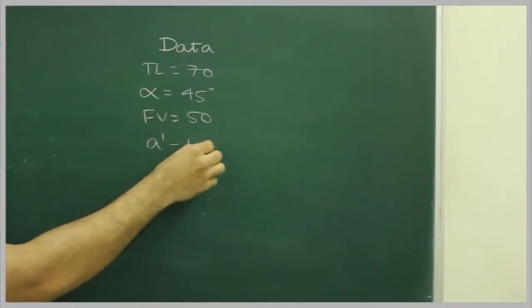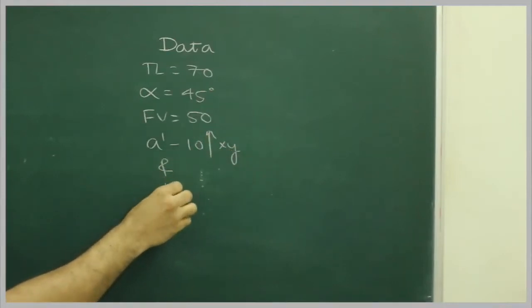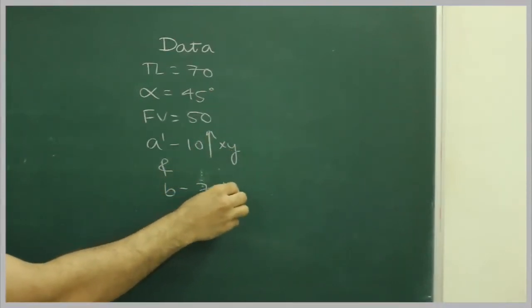A dash 10mm above xy, and B 70mm below xy.